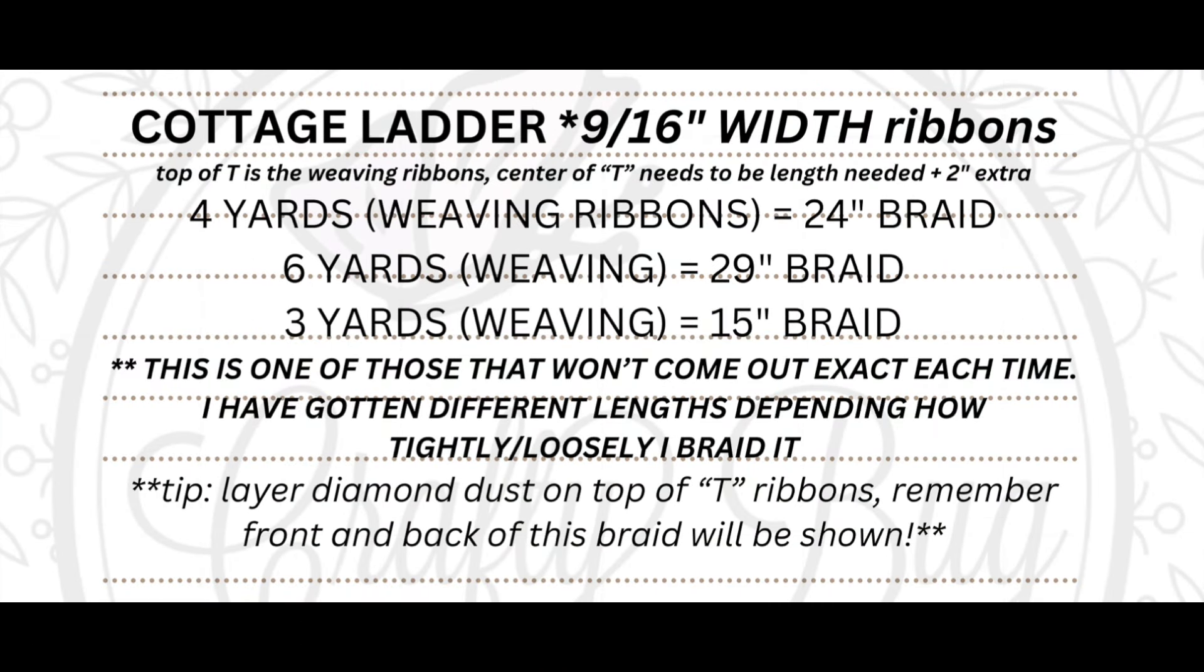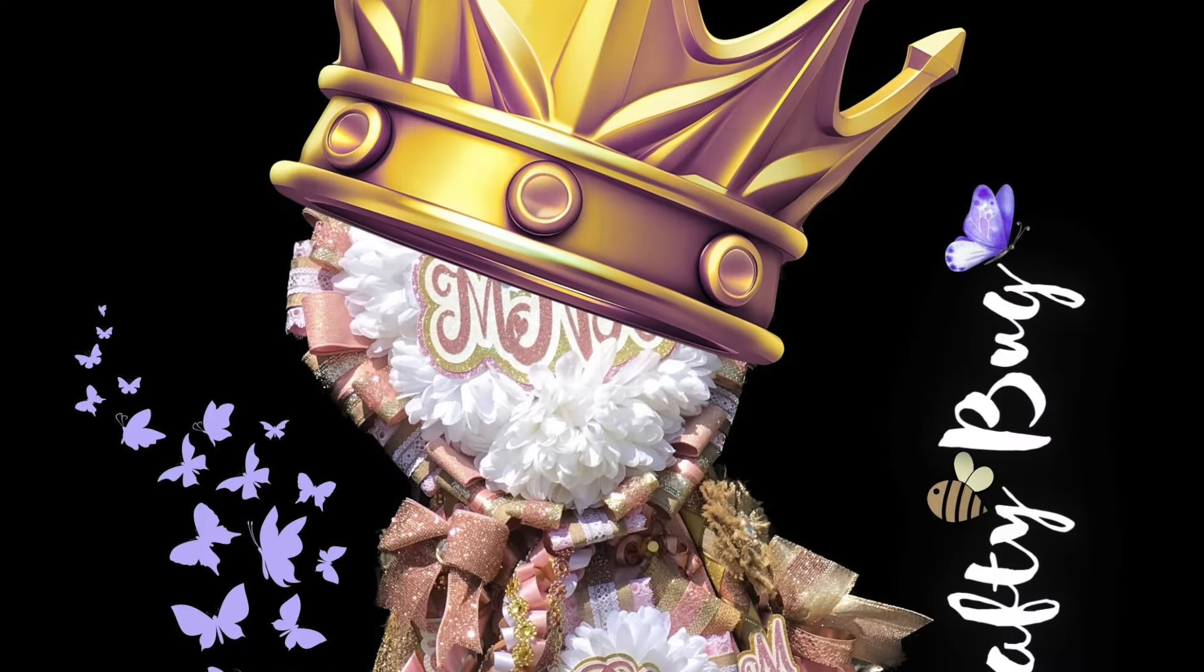Alright, and here are my measurements. So I was working with four yards weaving ribbons equals 24 inch braid. But like I said, on the purple and gold one, I did add an additional 12 inches to that. And you just find the center of that top tee, which is the weaving ribbons, and that's where you attach it to the ribbon that goes down the bottom of the tee. Like I said, go watch Connie's video. She's got a step-by-step on how to make it. I just want to show you how to do some different patterns with it.